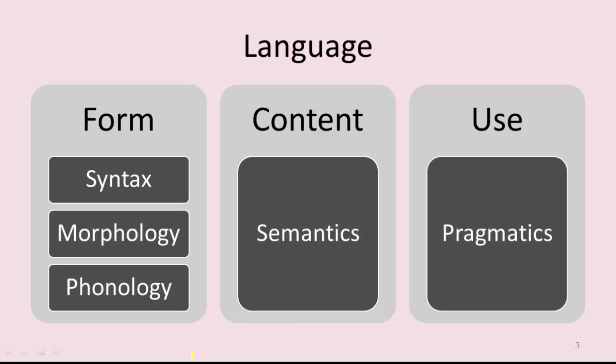Lois Bloom and Margaret Leahy in 1978 developed a language model composed of three areas: form, content, and use. Linguistic communication demands a person to master the form of a language, the content of the message, and the message use or function. Form consists of the following language domains, starting from below: phonology, morphology, and syntax. Content consists of semantics, and use consists of pragmatics.